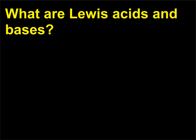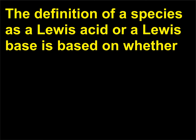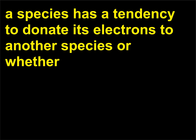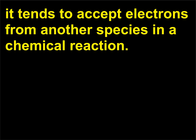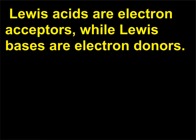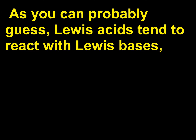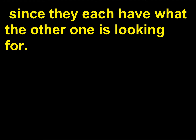What are Lewis acids and bases? The definition of a species as a Lewis acid or a Lewis base is based on whether a species has a tendency to donate its electrons to another species, or whether it tends to accept electrons from another species in a chemical reaction. Lewis acids are electron acceptors, while Lewis bases are electron donors. As you can probably guess, Lewis acids tend to react with Lewis bases, since they each have what the other one is looking for.